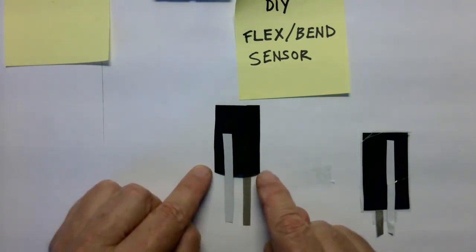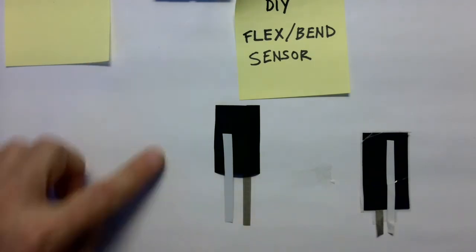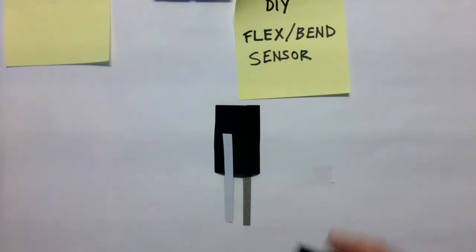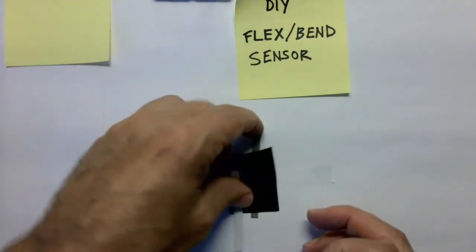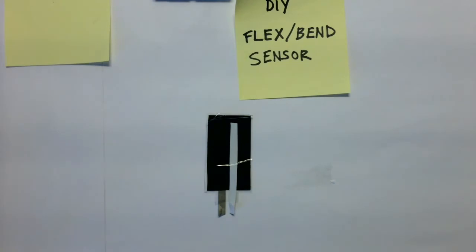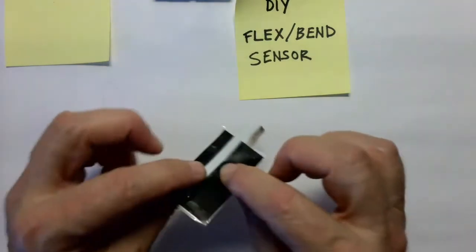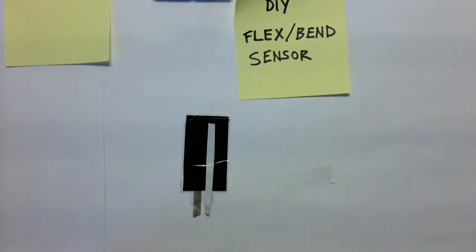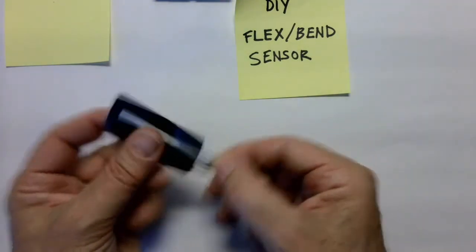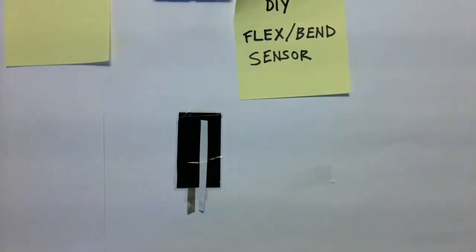So it's really simple. This would work. All I would have to do is tape it together to end up with something that looks like this. So that's the finished flex sensor. And then the next step would be, how do you use it? How do you run the electricity through it? So we'll get into that next.